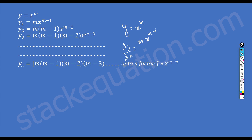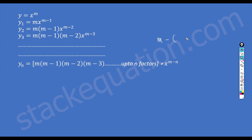When we are trying to find the first derivative, there is only one factor. For the second derivative, there are two factors. For the third derivative, there are three factors. So for the nth derivative, there are n factors. The last term: observe that for the third derivative, the last number subtracted from m is 2, and for the second derivative it is 1. So for n factors, the last number subtracted from m is n minus 1, meaning the last term is m minus (n minus 1).